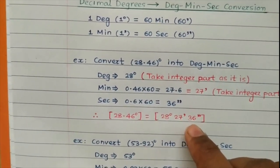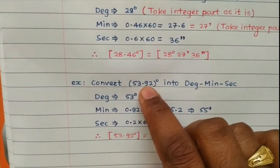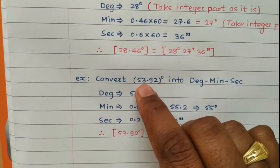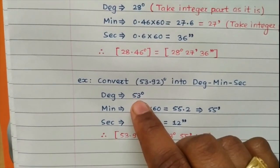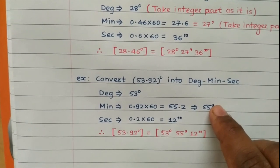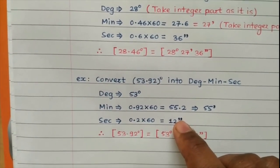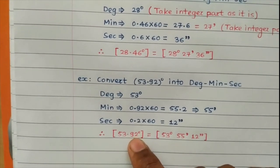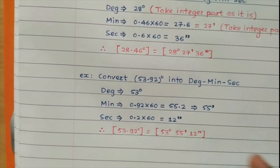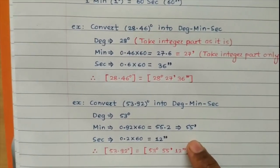Let us take another example. Suppose the angle is 53.92 degrees. Take the integer part: 53 degrees. The fractional part is 0.92; multiply by 60 to get 55.2, so that is 55 minutes. The remaining 0.2 multiplied by 60 gives 12 seconds. So 53.92 degrees equals 53 degrees, 55 minutes and 12 seconds. This is the theoretical process to convert any angle into degrees, minutes and seconds.